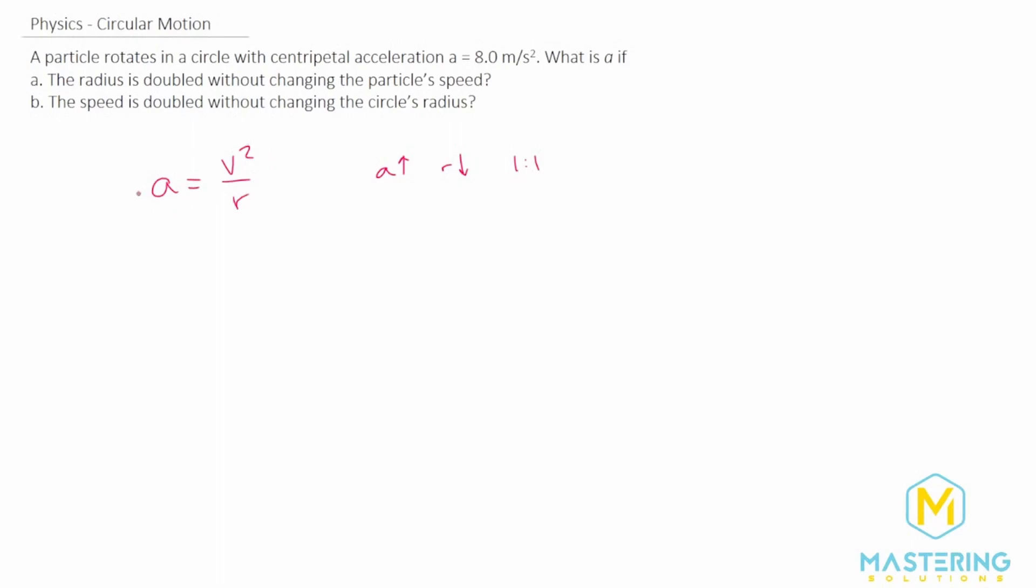Now the relationship between acceleration and velocity is proportional but with the velocity squared. If acceleration goes up, the velocity is going to quadruple.